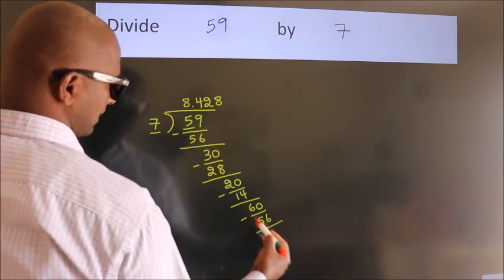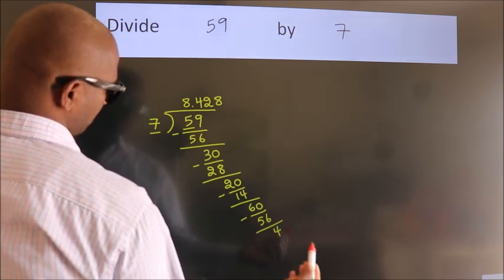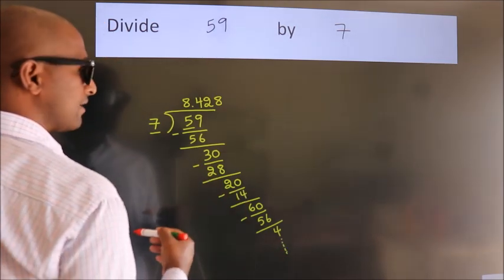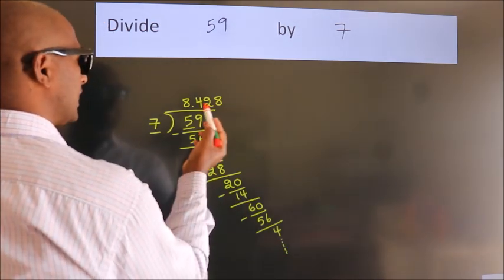Now we subtract. We get 4. And the division continues. It is enough if we do up to 3 decimal places.